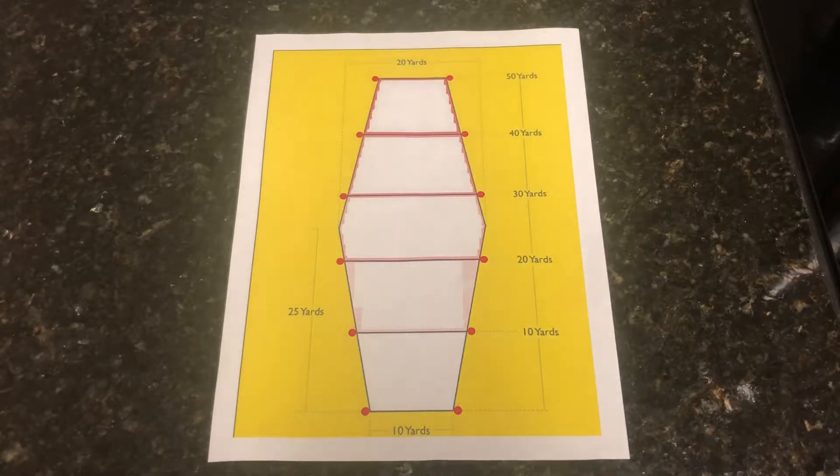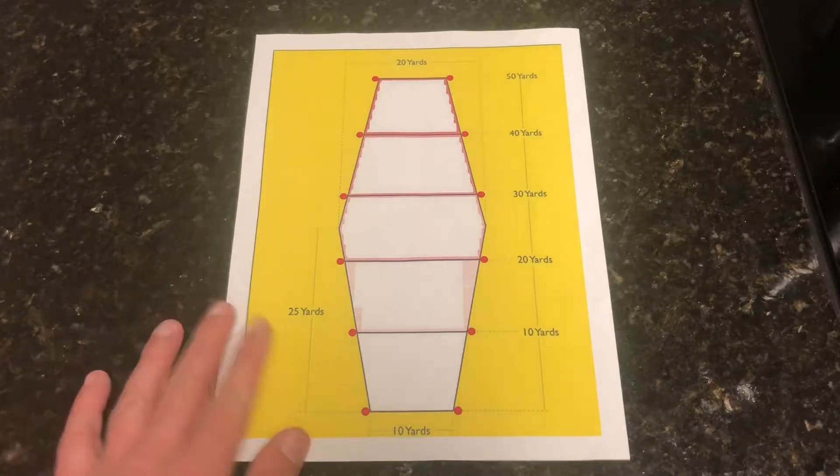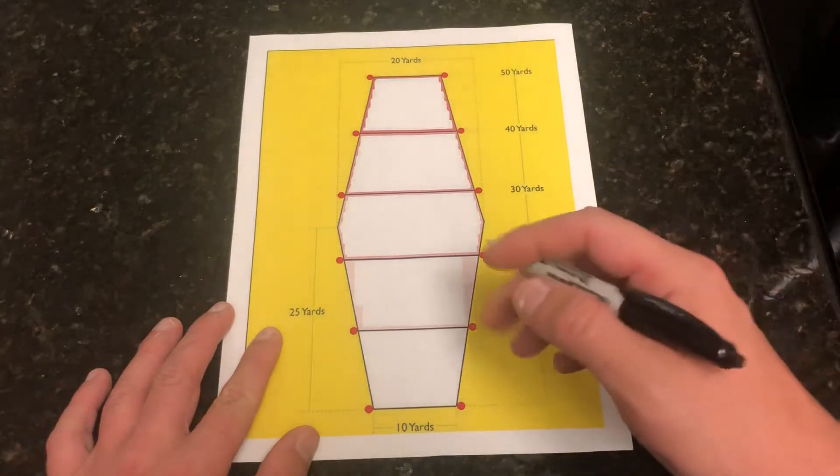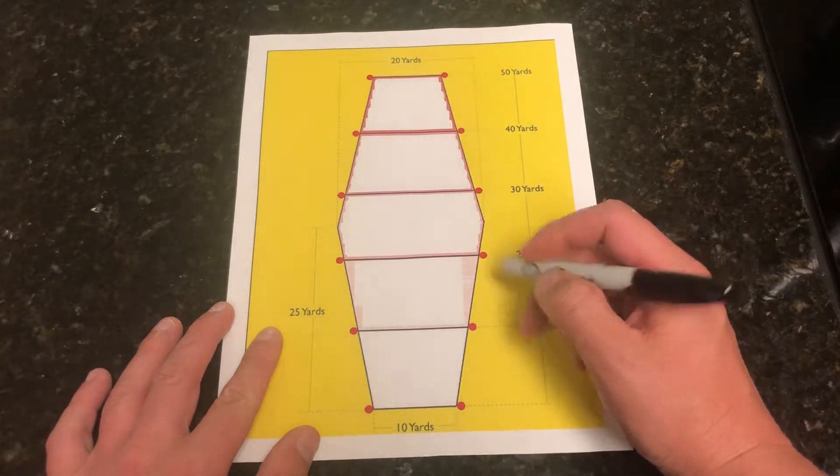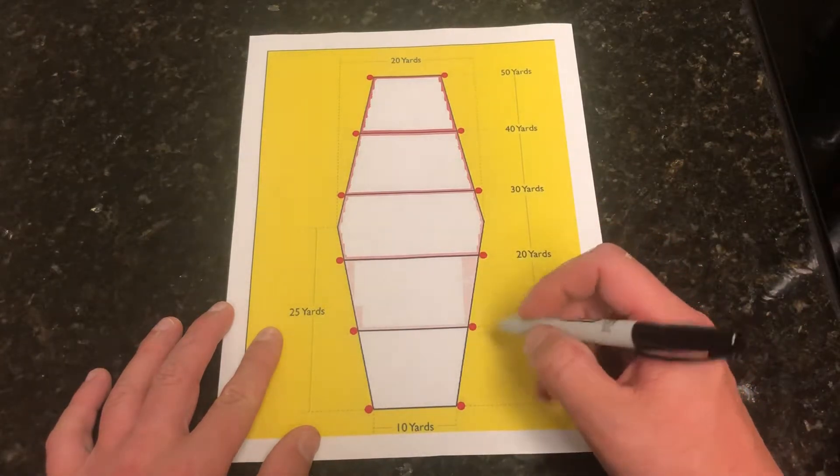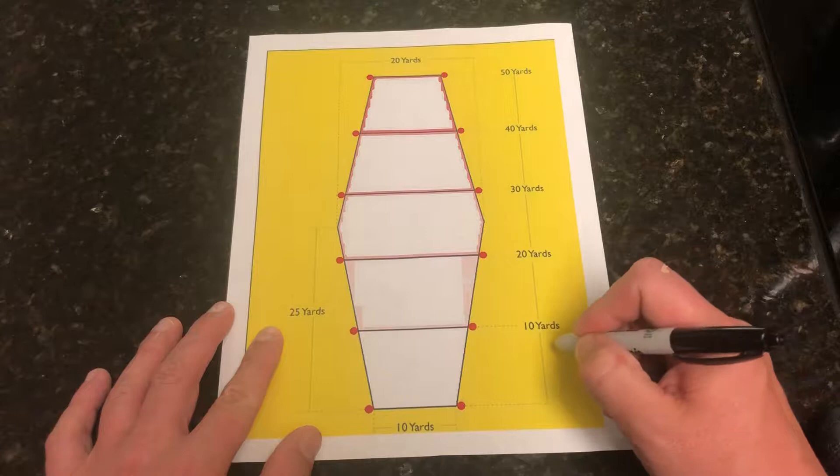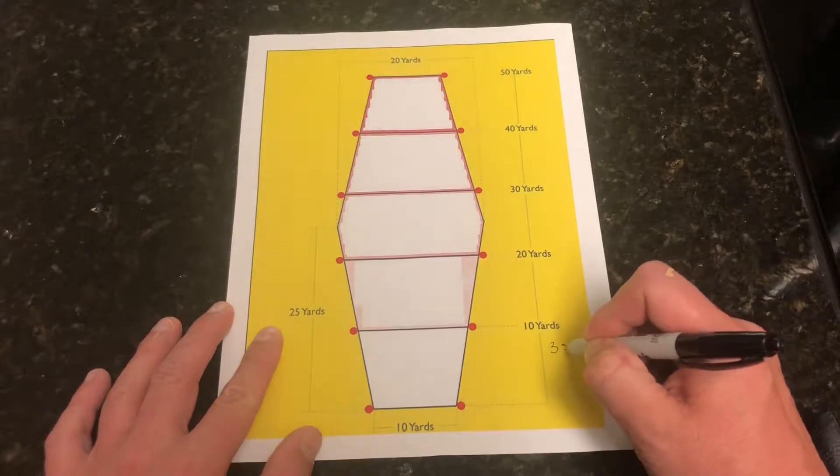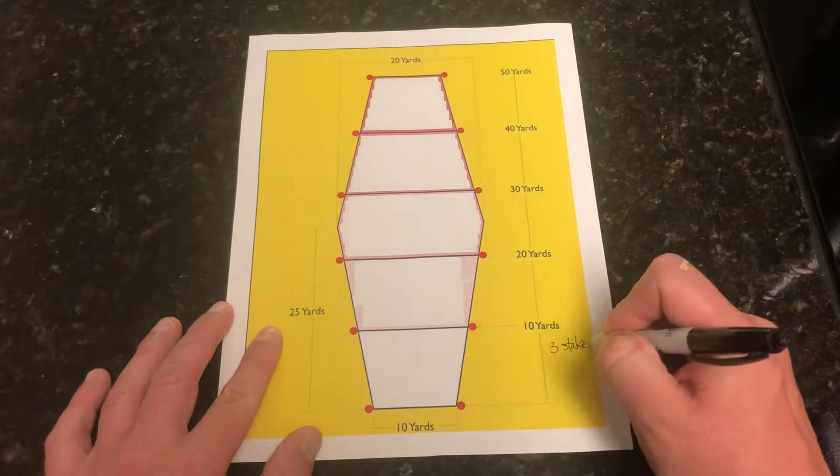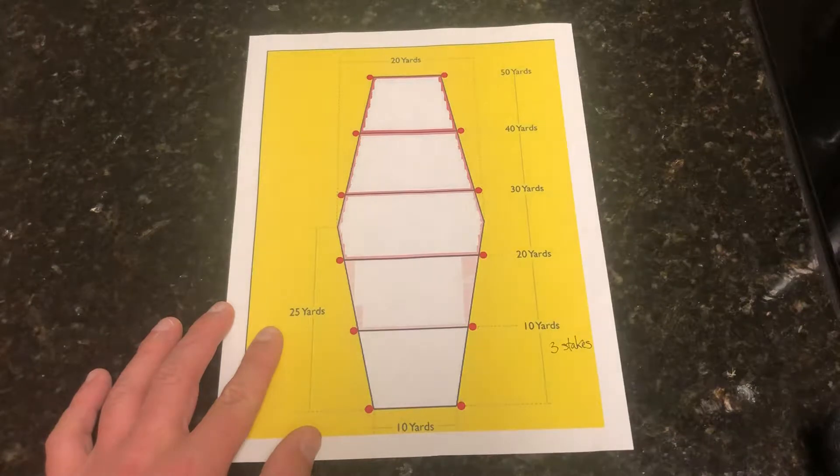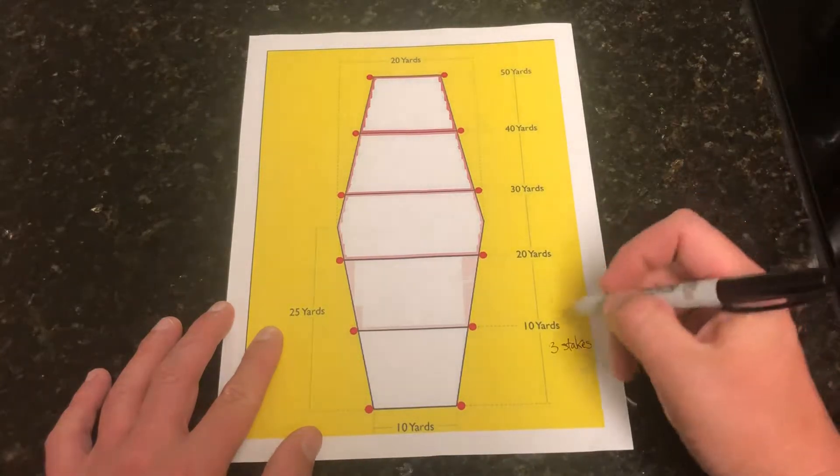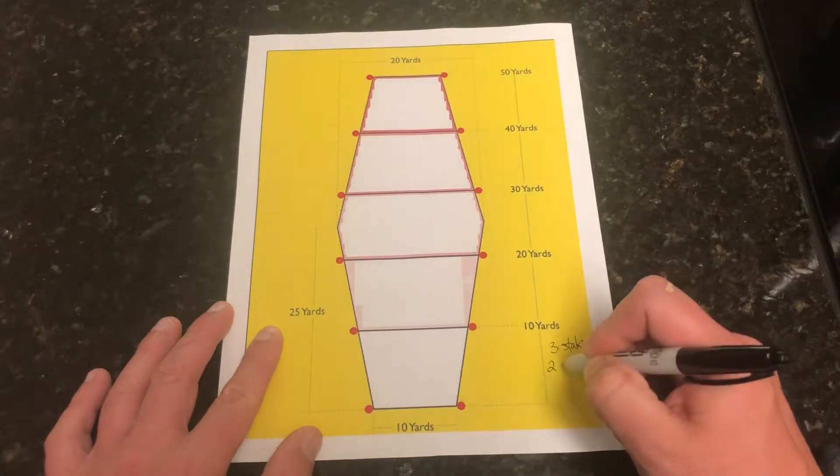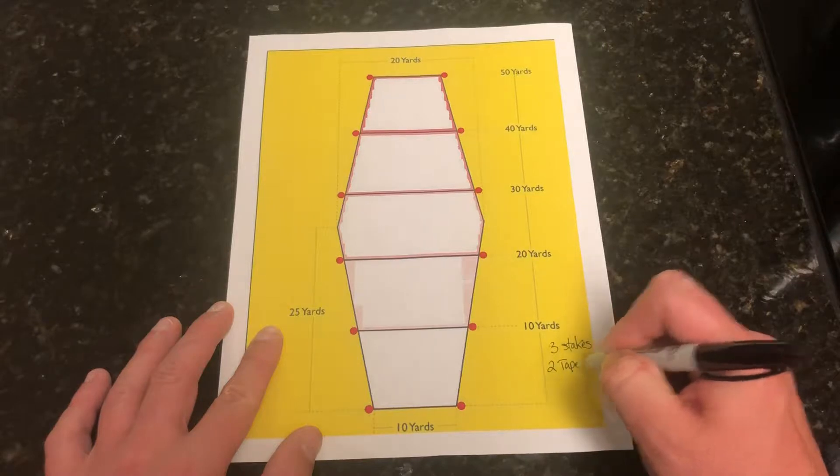To get started, there's a few things you need. The first thing you're going to need is three stakes. You can pick those up at your local hardware store. Basic tent stakes work, anything you got lying around the house that'll stick in the ground and hold firm for you is fine.